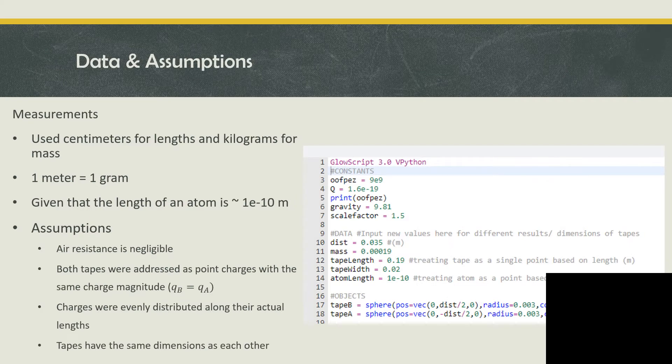To calculate the gravitational force of the tape, we used the density of 1 gram per meter of tape, and to calculate the area of the atom, we used the value 1 times 10 to the negative 10 meters. Some assumptions that were given were that air resistance is negligible, both tapes will be addressed as point charges and will have the same charge magnitude where the charge of tape A is equal to the charge of tape B. Additionally, it is assumed that the charges of the tapes were evenly distributed along their actual lengths, even though in reality the distribution of charges on a tape can vary, and also that the tapes have the same dimensions and surface area.